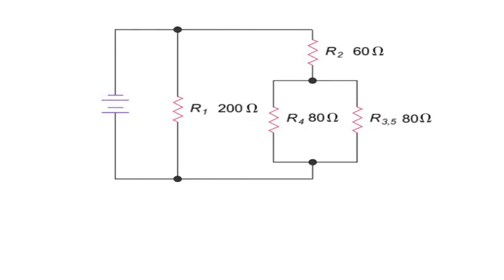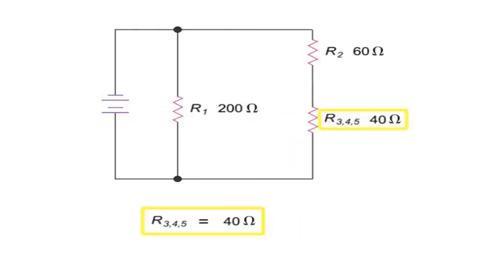Now, the R4 resistor and the equivalent resistance of the R3 and R5 resistors are in parallel. Their combined resistance can be calculated by dividing their product by their sum. Thus, using the product over sum equation, we have 80 times 80 equals 6400 divided by 80 plus 80, which is 160, giving 40 ohms.